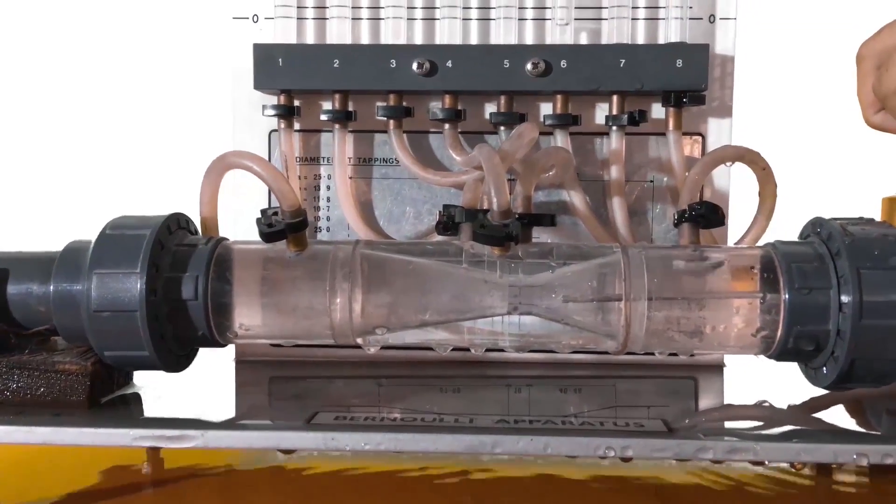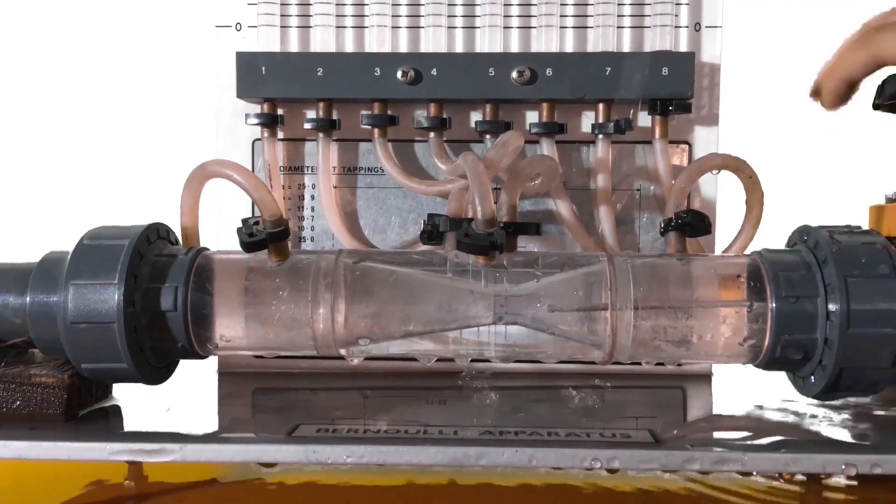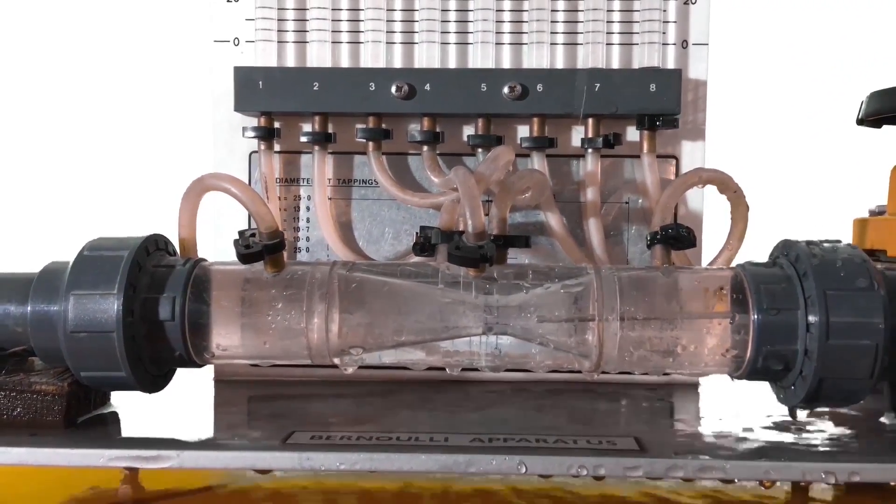This is how our venturimeter looks like when it's under use. There are six tapping points named alphabetically along the tube from A to F.